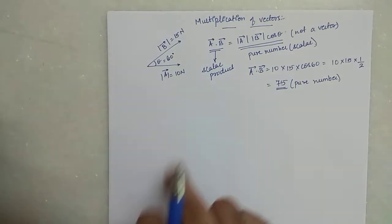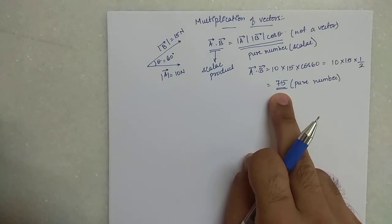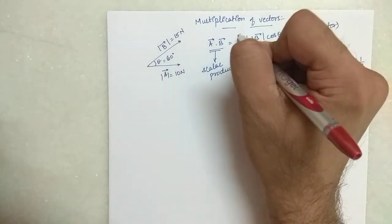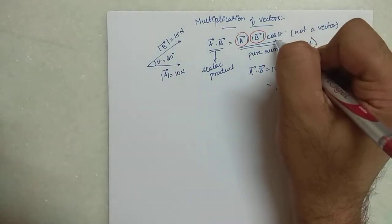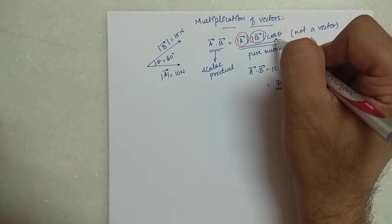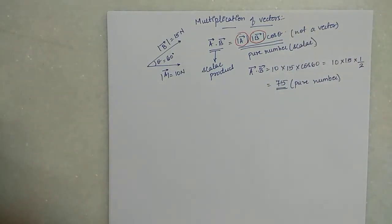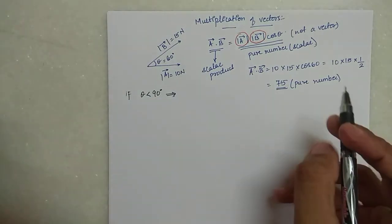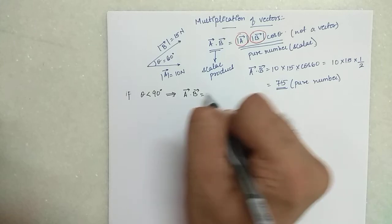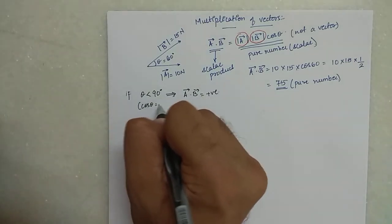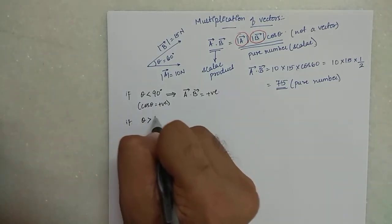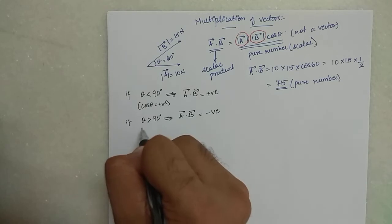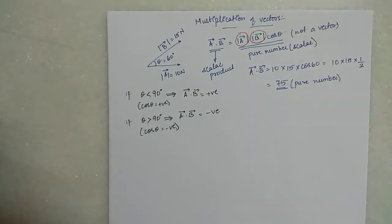So a dot b is also called scalar product. Now this number can be positive or negative — it depends upon cos theta. The magnitude is always a positive quantity, so what matters is cos theta. So I can write down two cases: if theta is less than 90 degrees, then a dot b will be a positive number because cos theta is positive. In the second case, if theta is greater than 90 degrees, then a dot b is a negative quantity because cos theta will be negative.